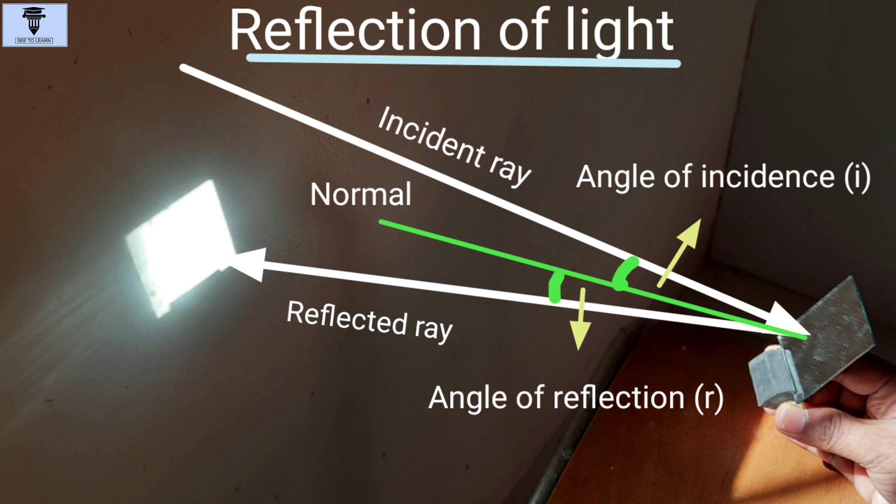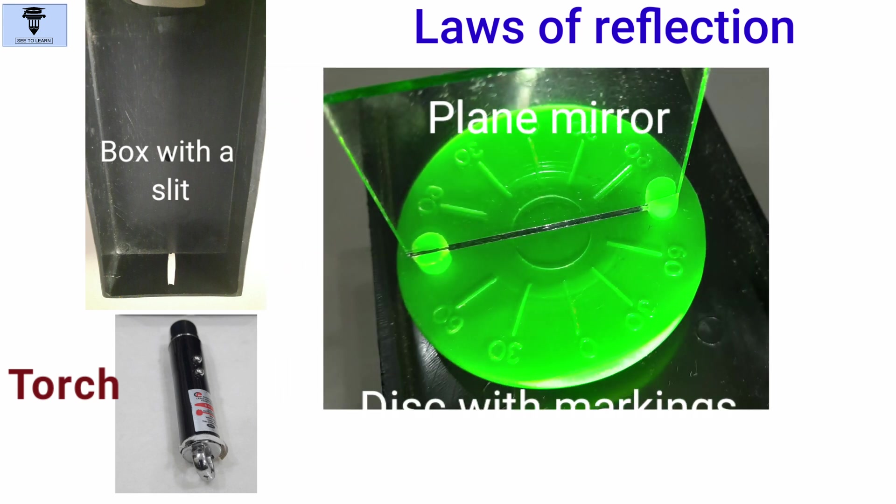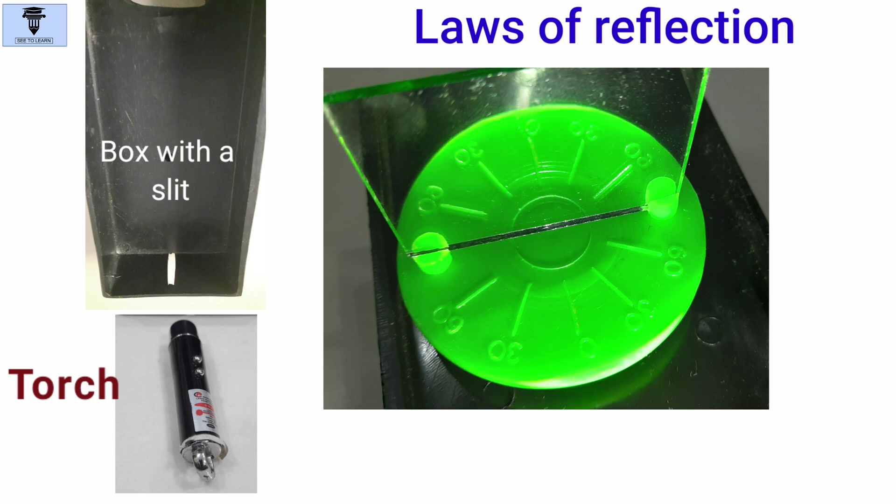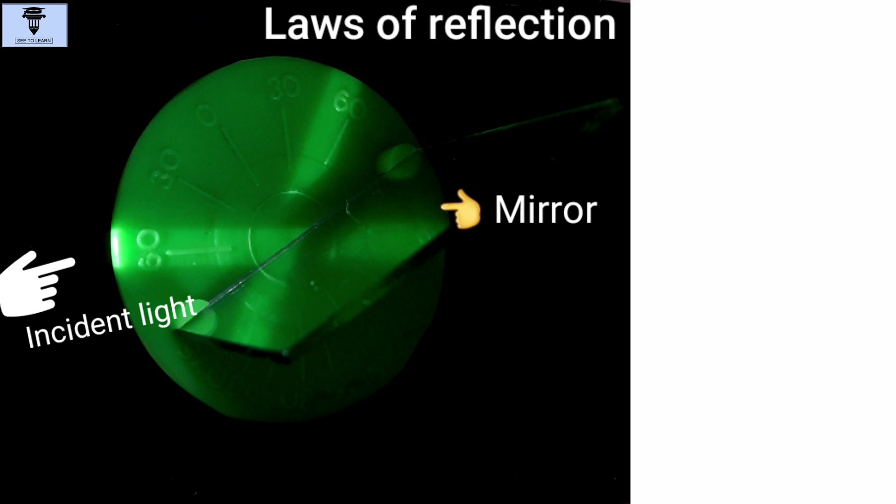This phenomenon of reflection is governed by certain laws called laws of reflection. To study them, we will perform an activity in dark using a light source like a torch or a bulb, a box with a slit, a plain mirror, which is kept on a small disc having markings like a protractor. Now, we have to keep the torch in front of the box in such a way that only a narrow light falls on the mirror through the slit. This is the incident light.